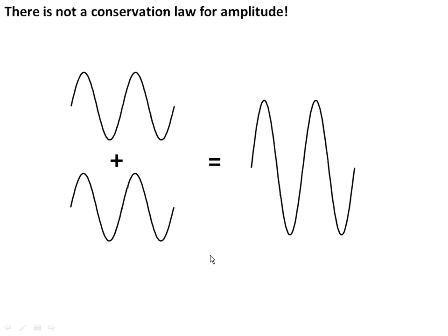Now, it turns out there's not a conservation law for amplitude. A lot of times we think if we add two waves together, and let's say each of these waves have an amplitude of 2, then we're going to get a bigger wave with an amplitude of 4 because 2 plus 2 equals 4. And that's conservation.